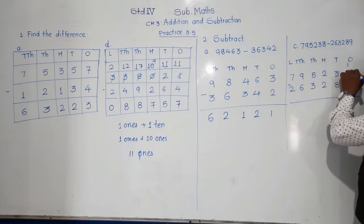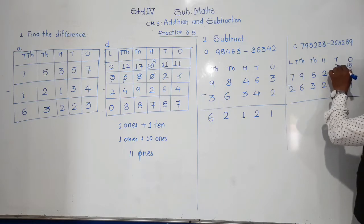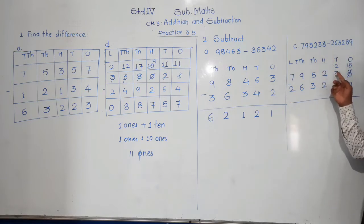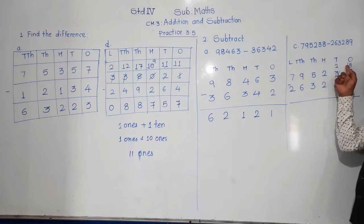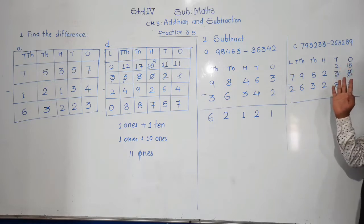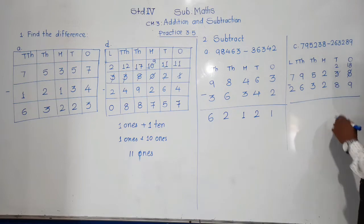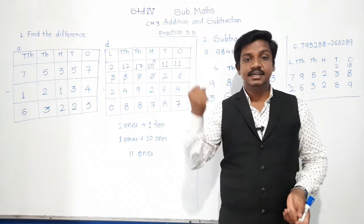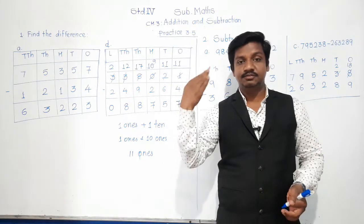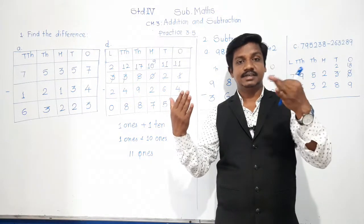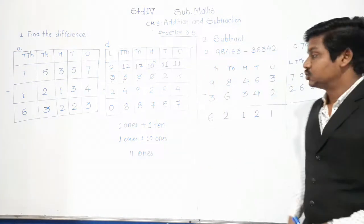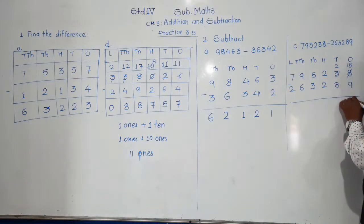18 minus 9: count after 9 till you reach 18 — that gives 9 fingers, so 18 minus 9 is 9. At tens place: 2 minus 8 — not possible. Borrow from hundreds: 2 becomes 12 tens, and hundreds digit becomes 1. 12 minus 8: count after 8 till 12 — that gives 4 fingers, so 12 minus 8 is 4.